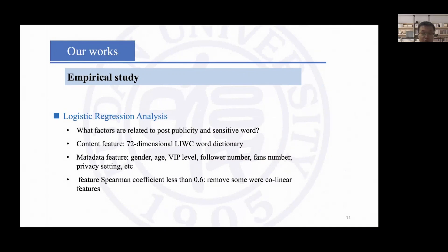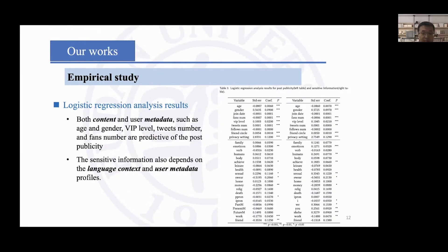We conducted a logistic regression model to explore what factors are related to the post's publicity and sensitive information. We introduced both textual content and user metadata into the model. The textual content is represented by the LIWC dictionary. After basic processing, we performed the analysis. We found most user metadata features, such as gender, age, and VIP level, are related to the post's publicity.